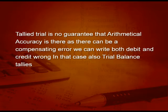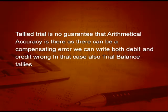One should also note that even a tallied trial balance is no guarantee of full arithmetical accuracy, as there can be a compensating error — where a mistake in debit is equal to a mistake in credit. Both debit and credit can be written wrong. In all these cases, the trial balance will tally, but only arithmetical accuracy is shown, not fool-proof accuracy.